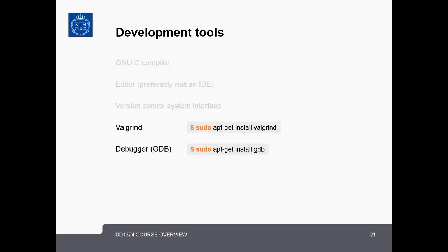You will also need several debugging tools for debugging your code and demonstrating that your code does not have memory leaks at the end of the course. These include Valgrind and the debugger GDB. They should be installed by default on your Ubuntu system, but if not, you can install them with: sudo apt-get install valgrind and sudo apt-get install gdb.